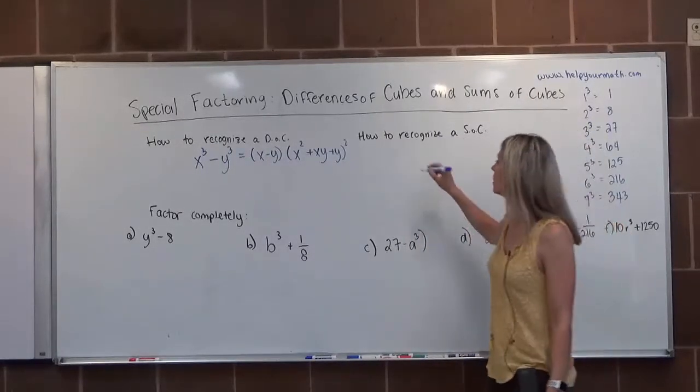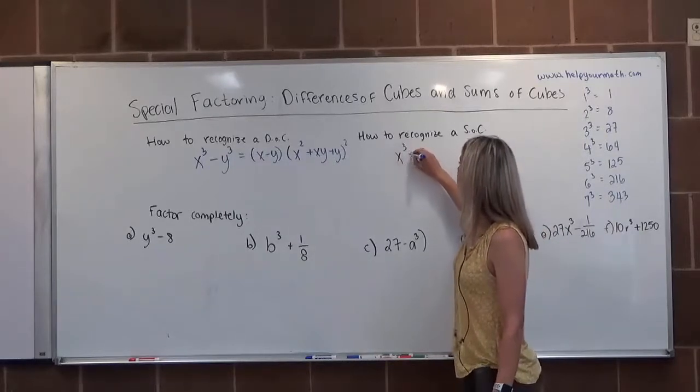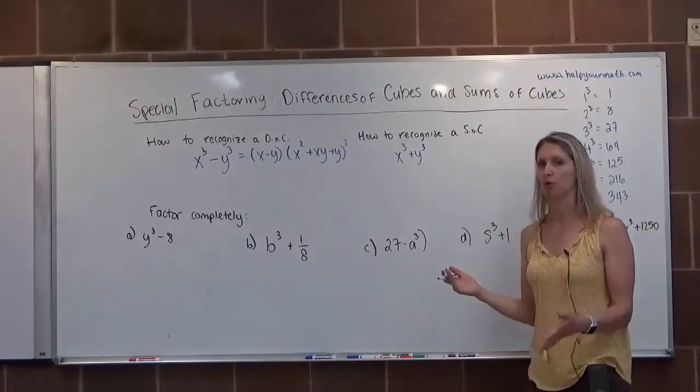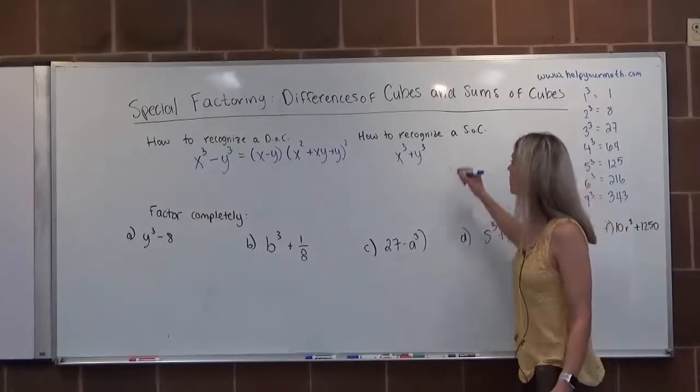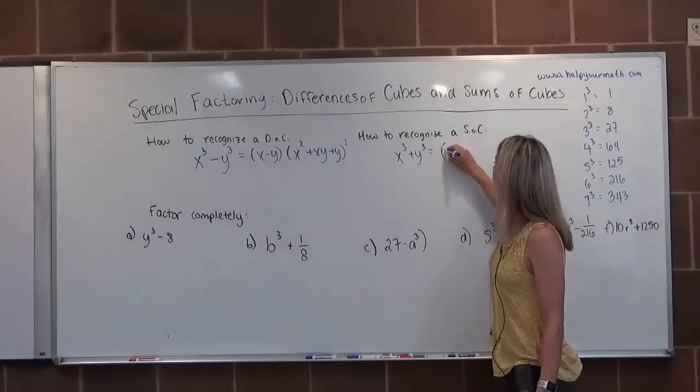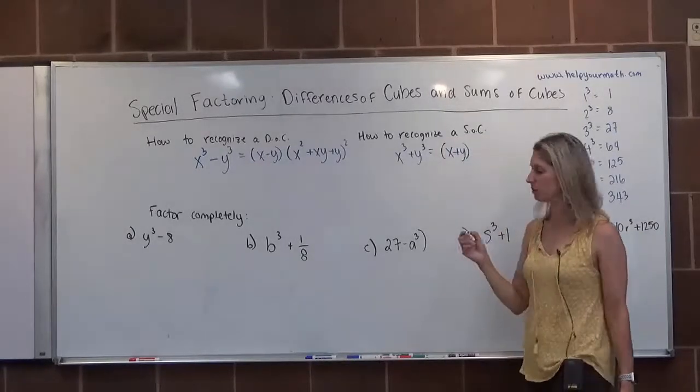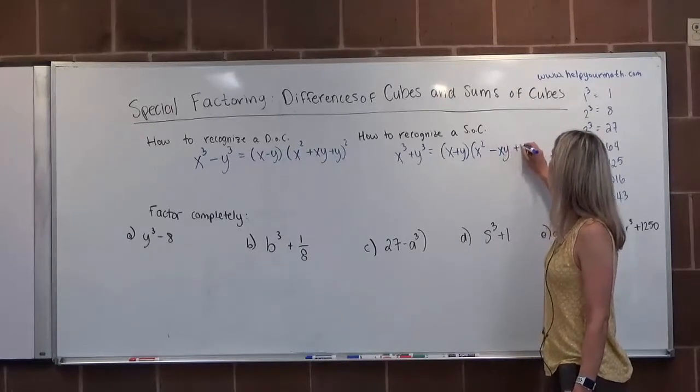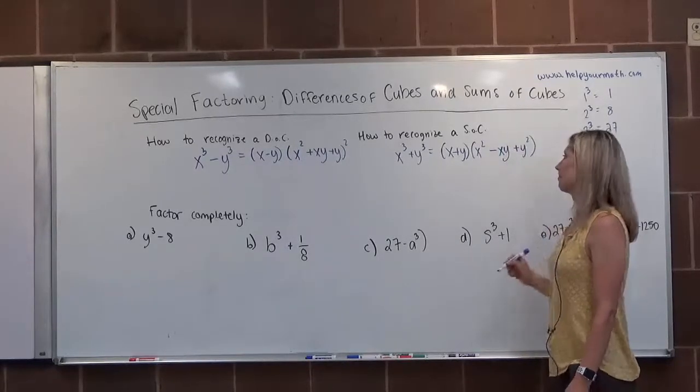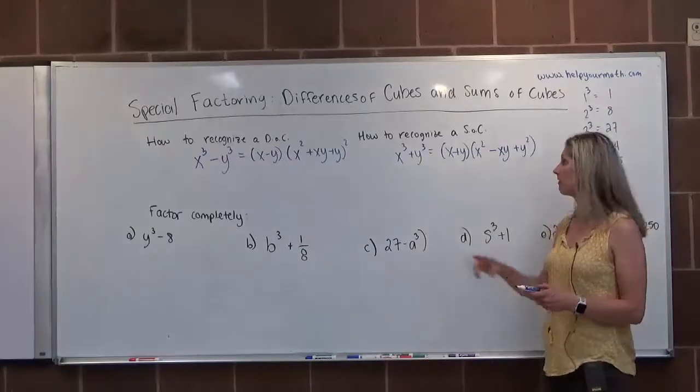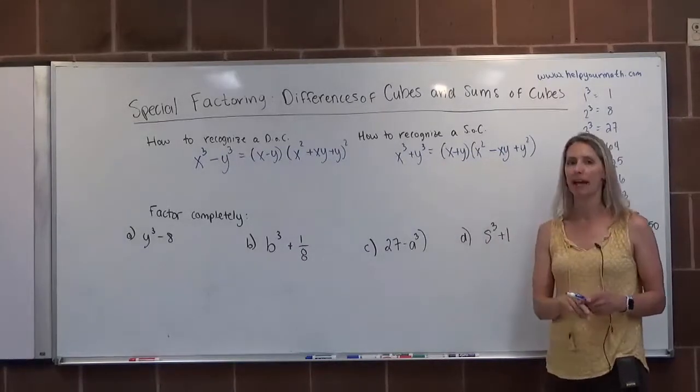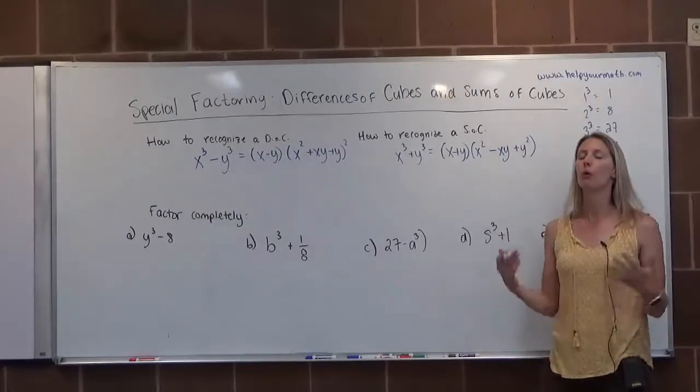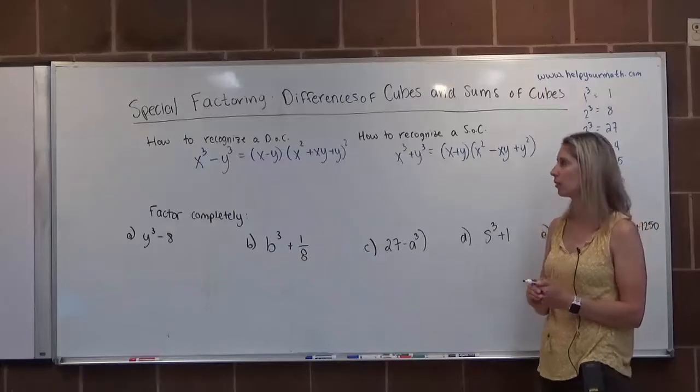How to recognize the sum of cubes? It's just going to be cube plus cube. Unlike a difference of squares where there is no sum of squares, there is a sum of cubes. It factors into root plus root times root squared minus the product of the two roots plus the second root squared. These are the two formulas we want to know and love when we're talking about factoring things that are cubes.